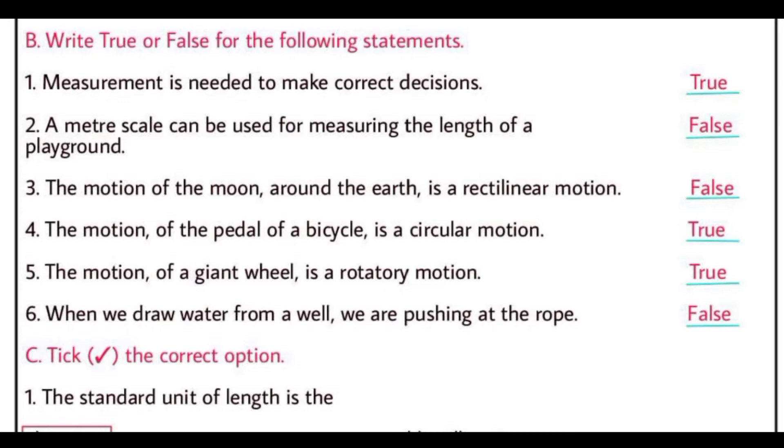A meter scale can be used for measuring the length of a playground. Playground ek bahut bada area hota hai, jisko hum meter scale se naapein, toh hume bahut pareshani hogi. Is liye hum bade unit ka istemal karte hain. Third one is, the motion of the moon around the earth is a rectilinear motion. The statement is false, kyunki rectilinear motion straight path mein hota hai, jabki moon earth ke charo taraf circular path mein, curved path mein ghoomta hai.